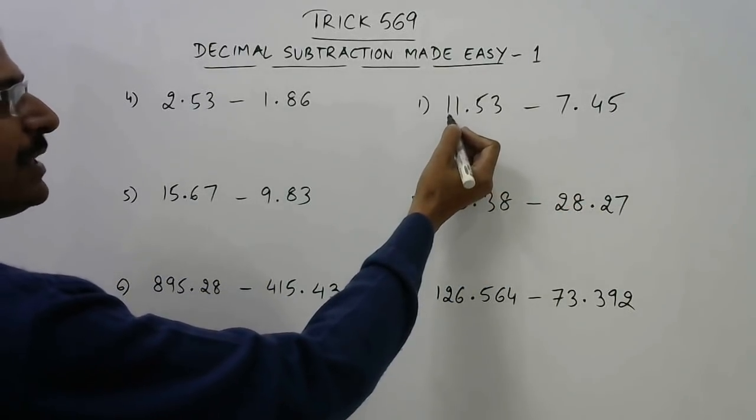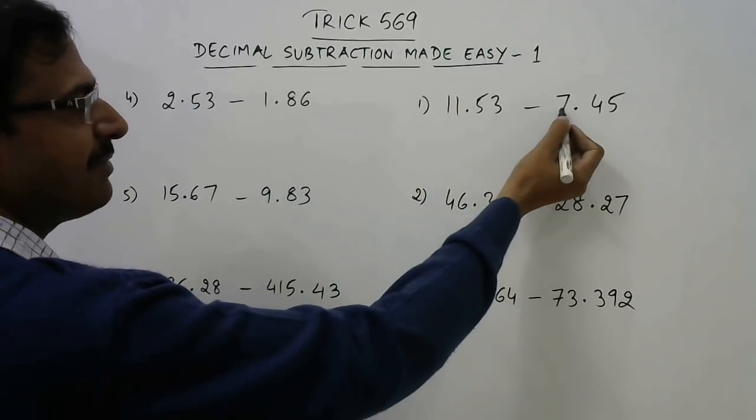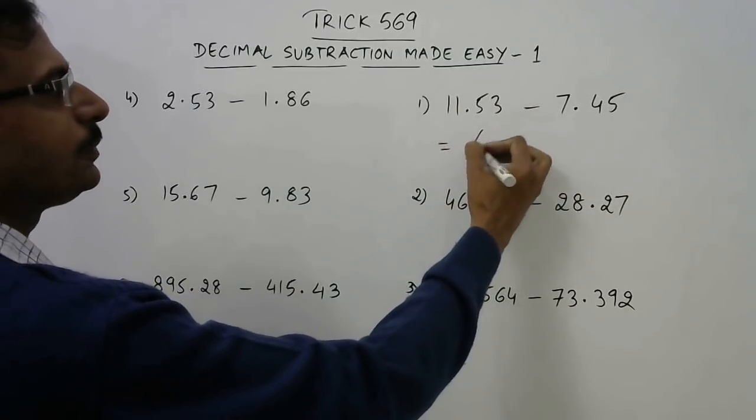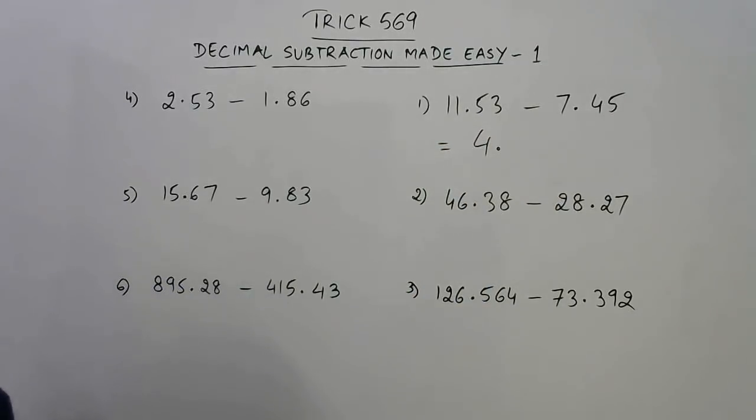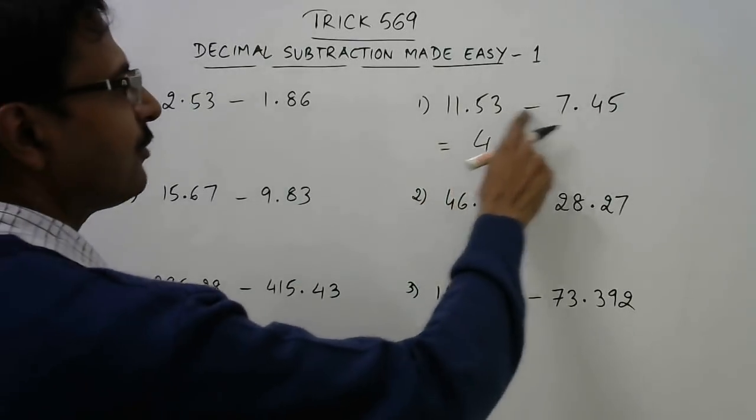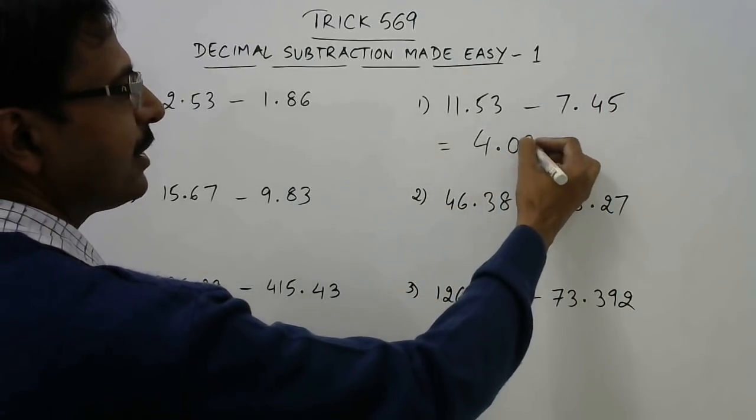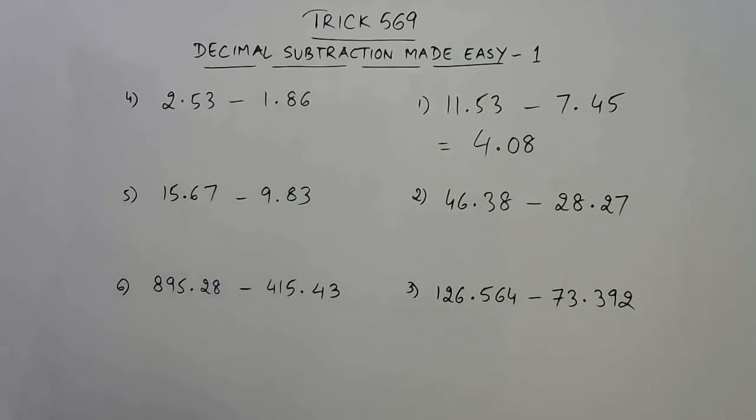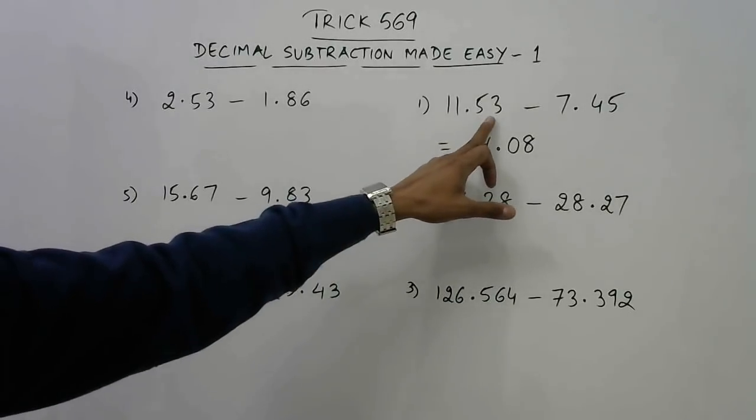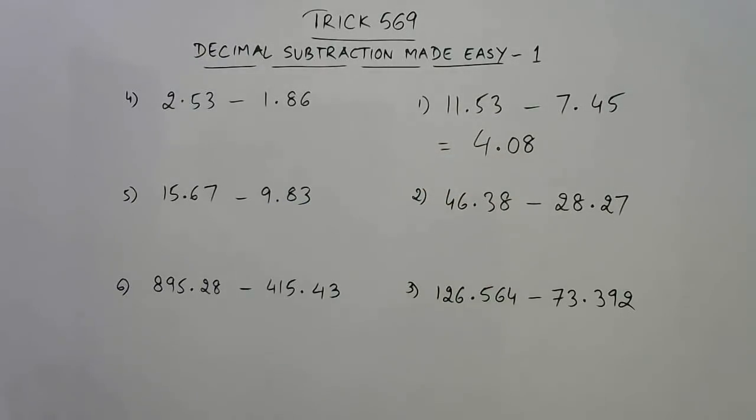That is 11 minus 7, that is 4, so your answer will start with 4 point. And finally 53 and 45, the difference is 8. But we need to write 0 8 because if the numbers have two decimal places, then the answer will also have two places of decimal after this point. So 4 point 0 8, not 4 point 8.